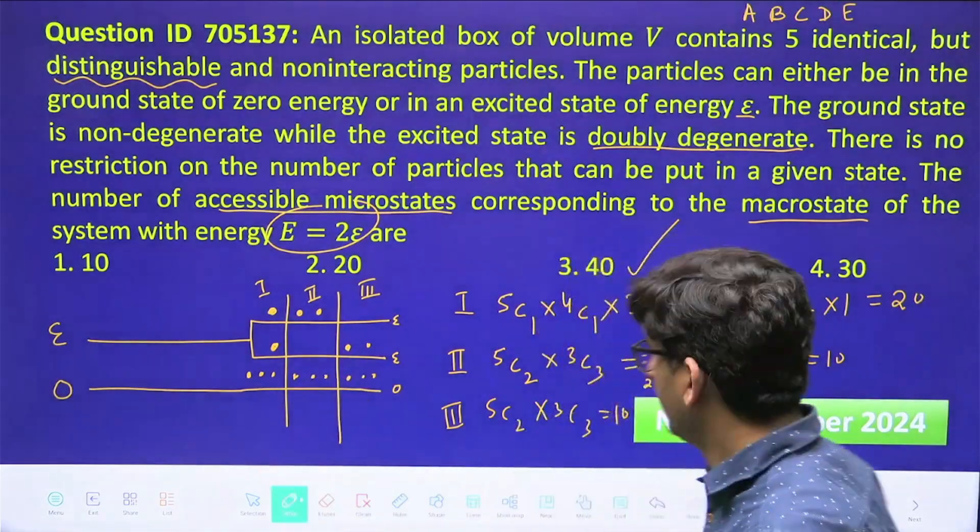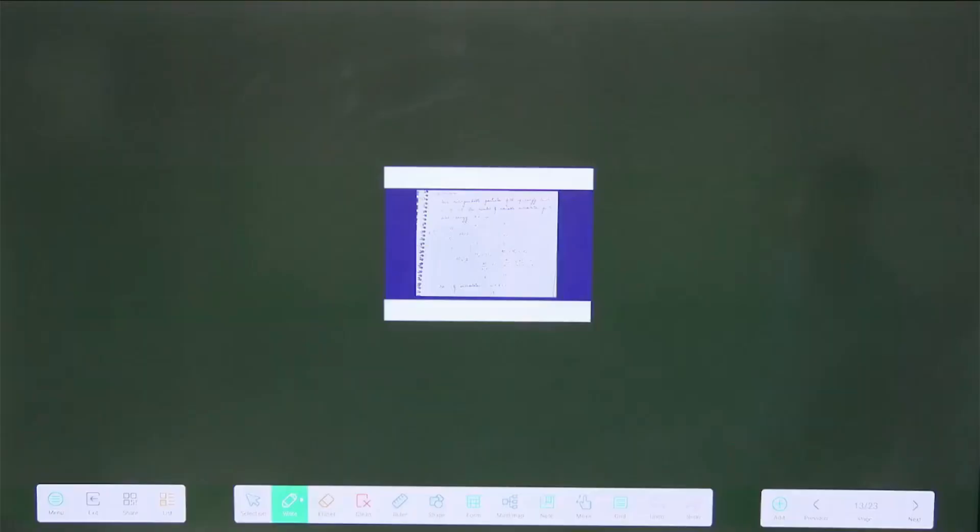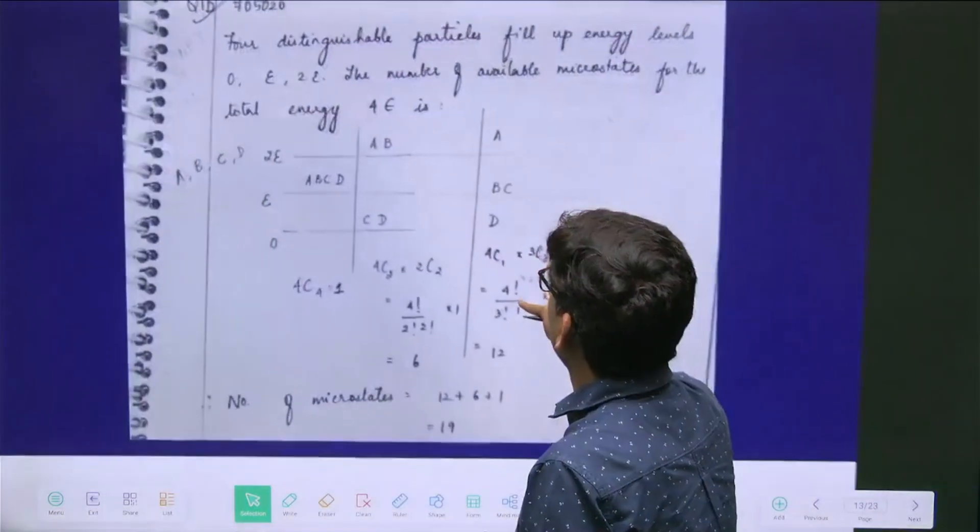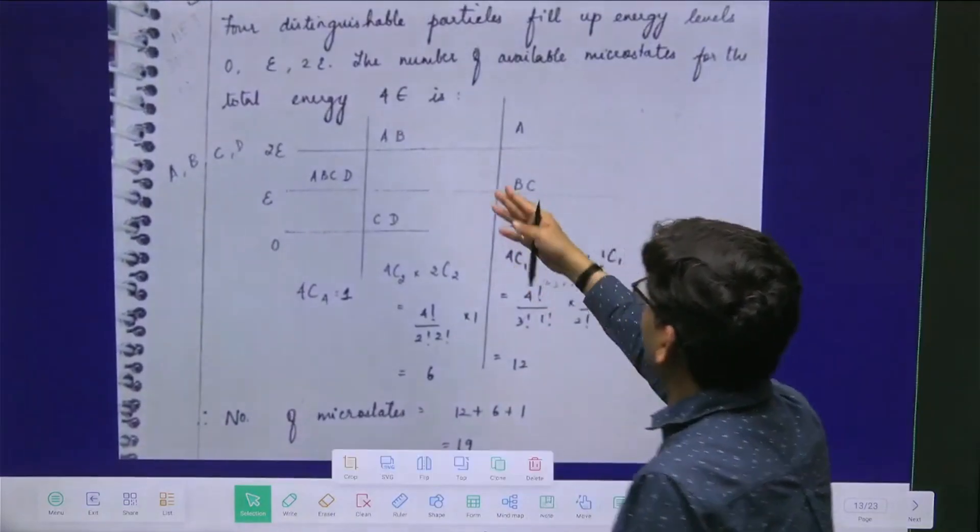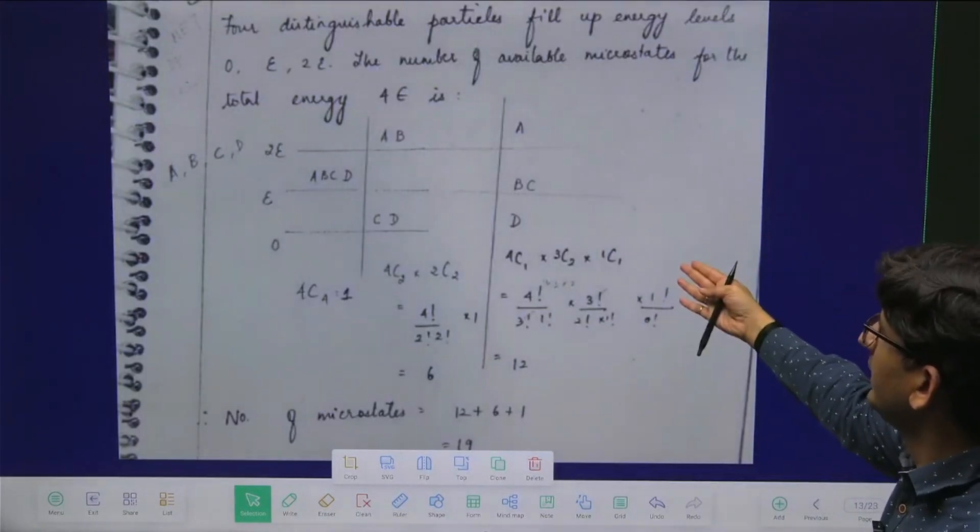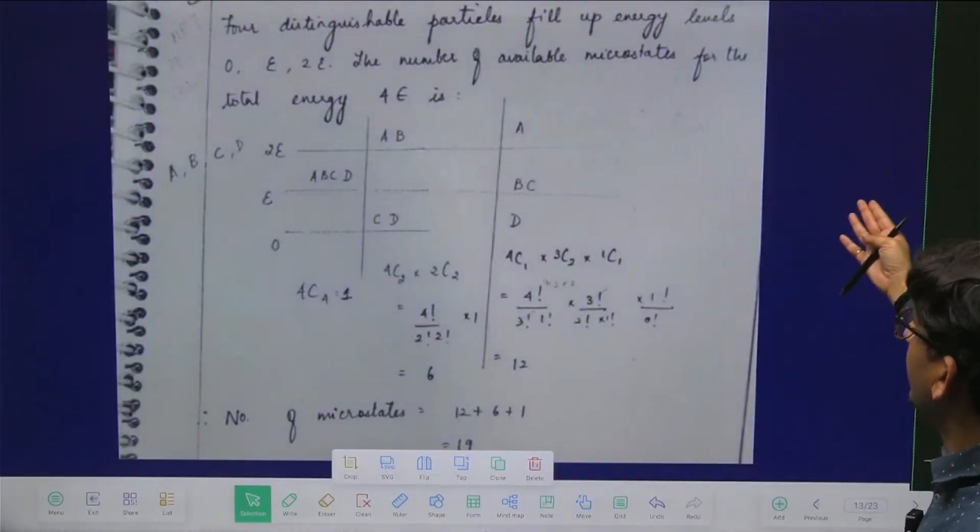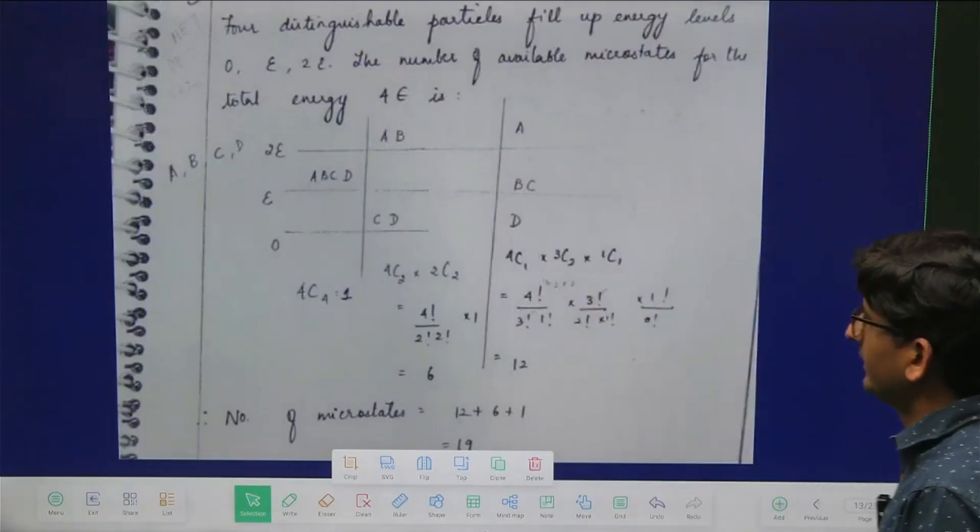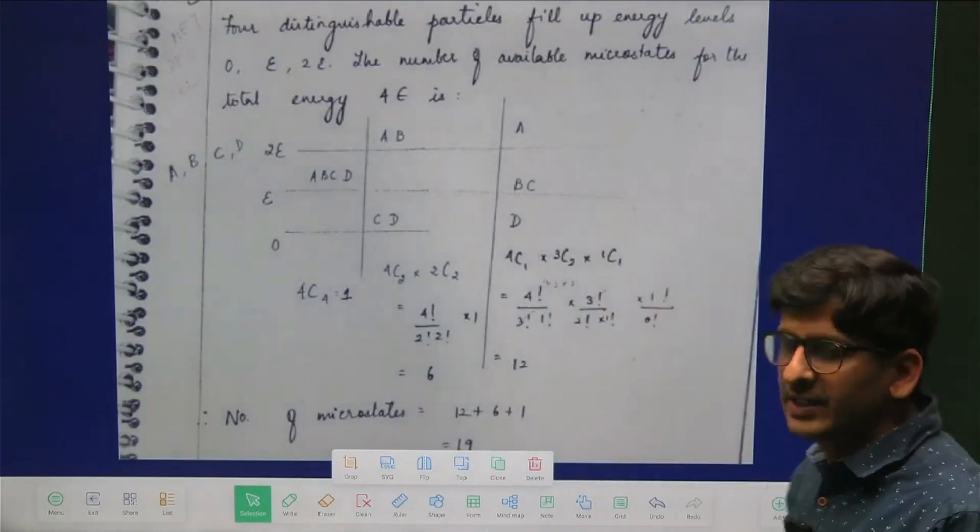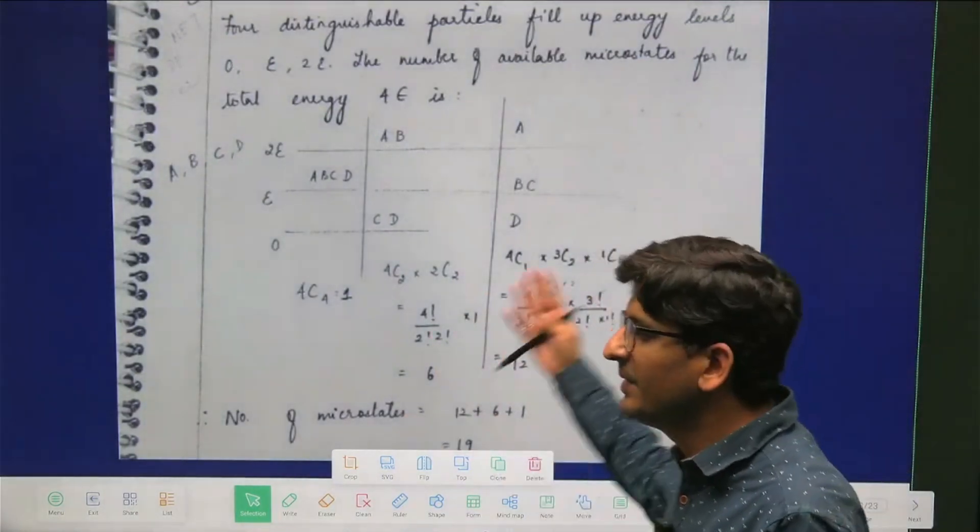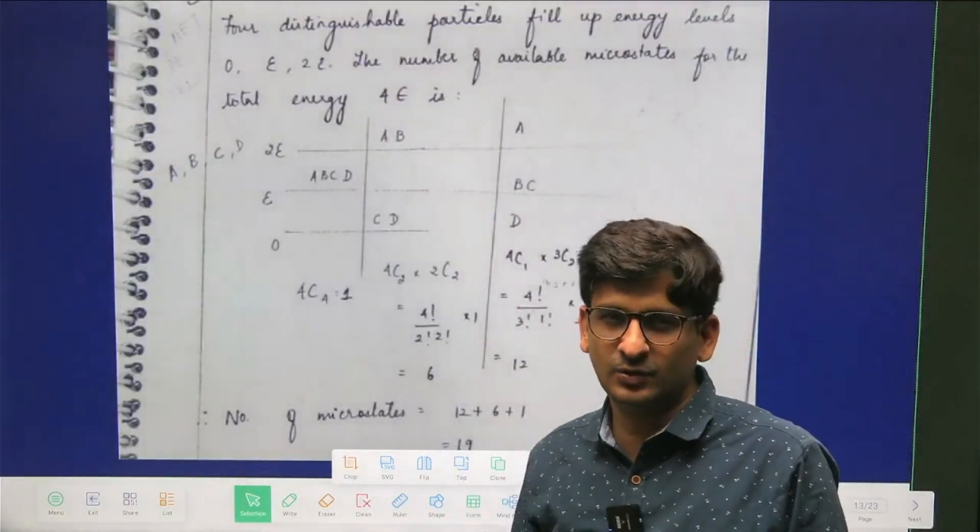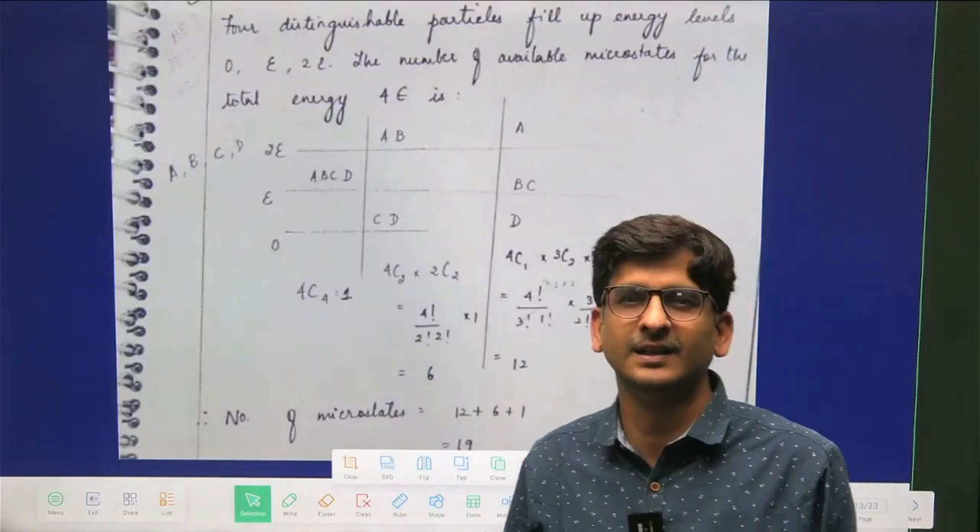This is the way I solve questions in class also. Just you can see one of the snaps from my class notes. In this problem, what I have done: I had four distinguishable particles filling up energy levels 0, e, 2e, and the number of favorable microstates I asked for total energy 4e. So this time also I have applied the same method to calculate, and they were also distinguishable particles. You can see a similar question was asked in this exam. You can see it is very, very close to the question that I have done in class. Thank you so much.